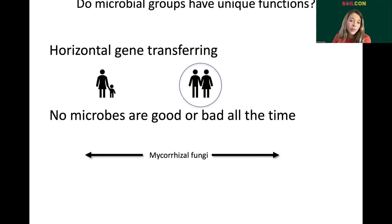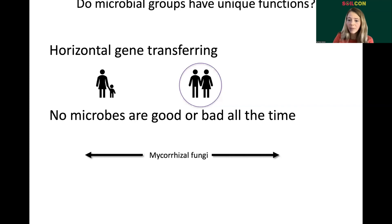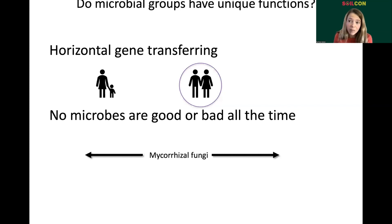Also, no microbes are actually good or bad all the time — and I think this is underappreciated. Mycorrhizal fungi is an example of a mutualist that can deliver nutrients to plants. But if that mycorrhizal is not getting carbon from the plant or is otherwise stressed, in some cases we see them becoming parasites to the plant and trying to steal those nutrients. So this is really context dependent.